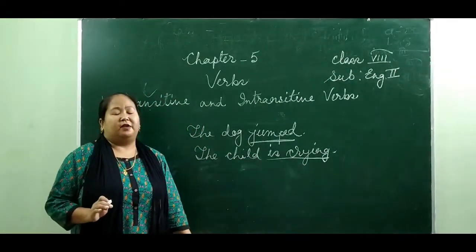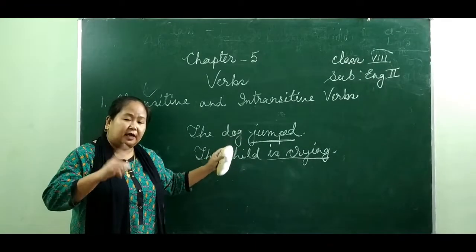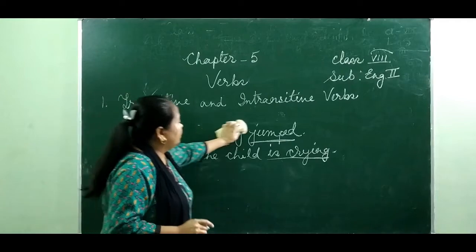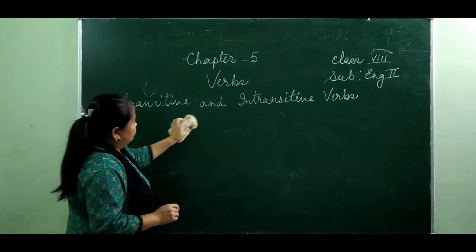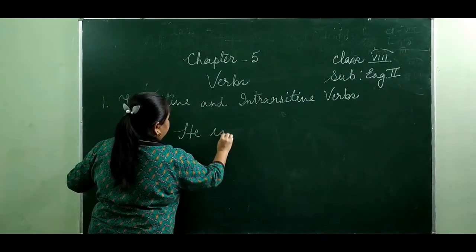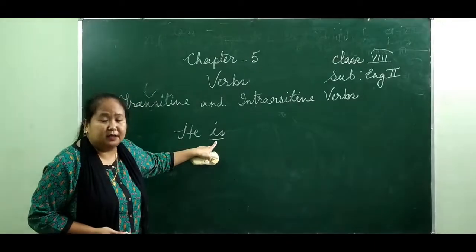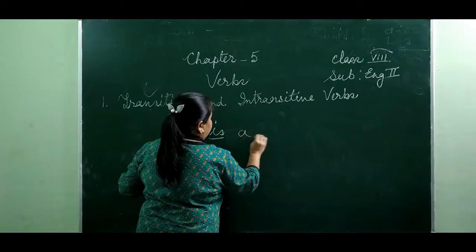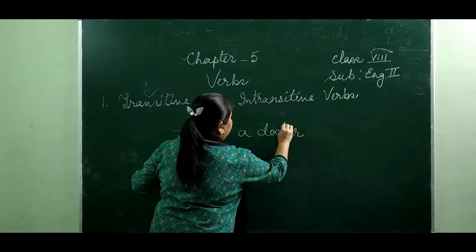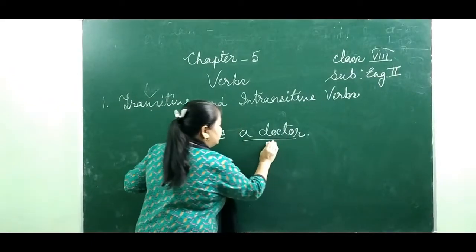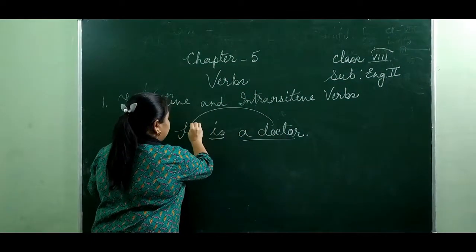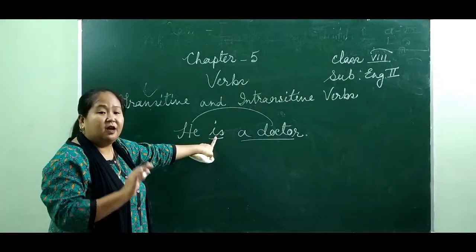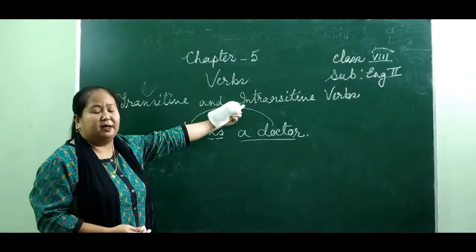Sometimes some intransitive verbs do not take any object to complete their meaning, but they do take some other words or group of words to complete their meaning — and they are called complement. For example, 'he is' doesn't complete the meaning. But the verb 'is' doesn't take any object. If I say 'he is a doctor,' now it completes the meaning. 'A doctor' is not an object because it refers back to the subject — so this is a subject complement. The verb 'is' is an intransitive verb because it doesn't take any object to complete its meaning.